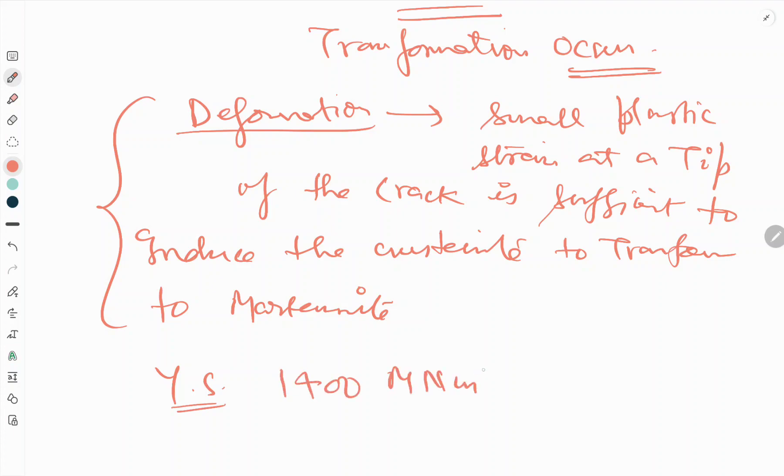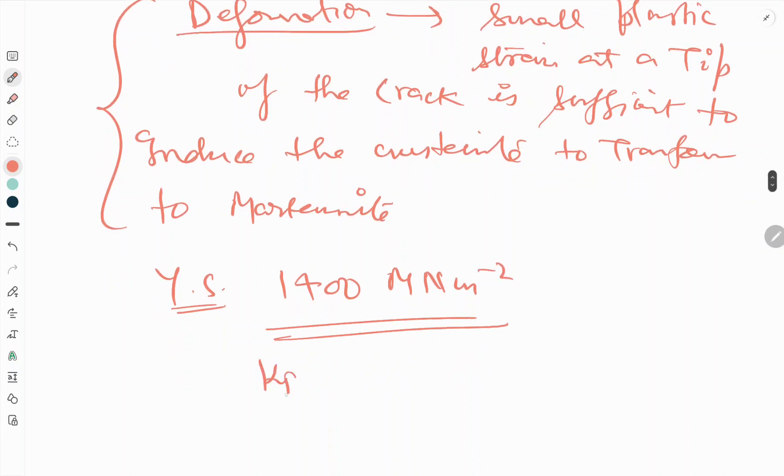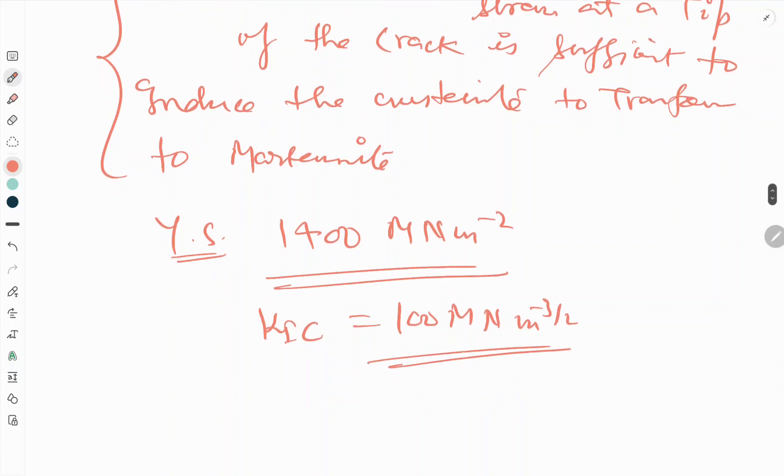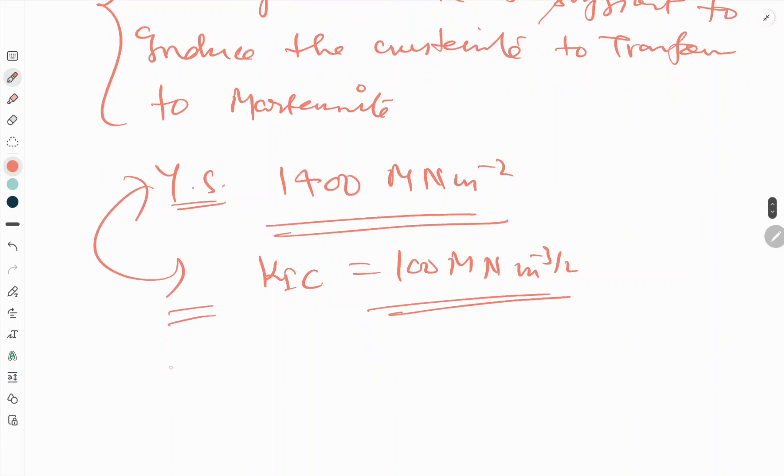MN/m². And the fracture toughness, that Kic value, is 100 MN/m^(3/2). So this is the combination - yield strength plus fracture toughness. Like maraging steels, TRIP steels are expensive.